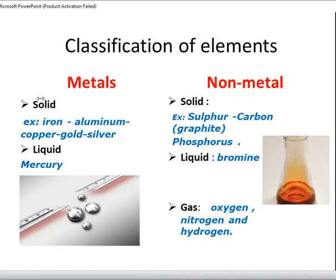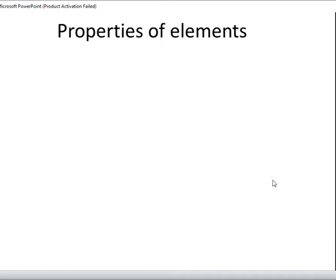So to summarise: metals exist in two states — solid and liquid — while non-metals exist in three states — solid, liquid and gas. The only liquid metal is mercury, while the only liquid non-metal is bromine.